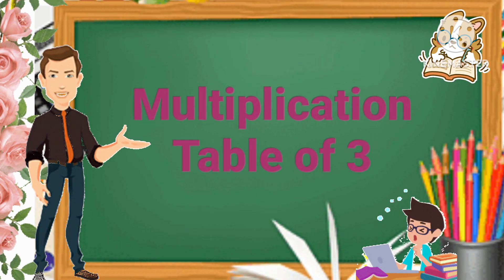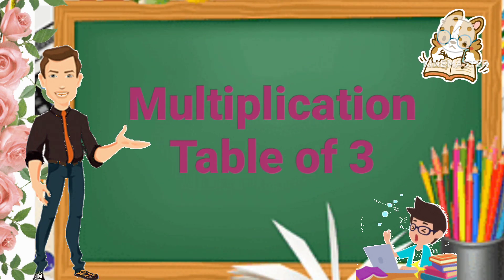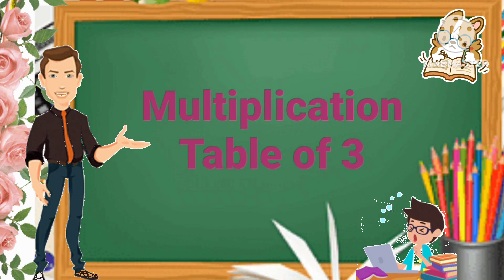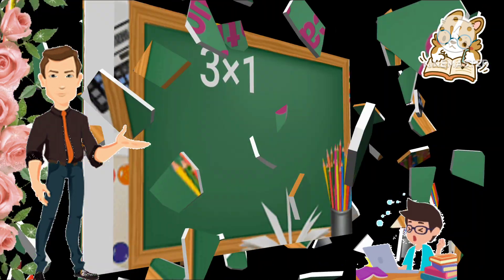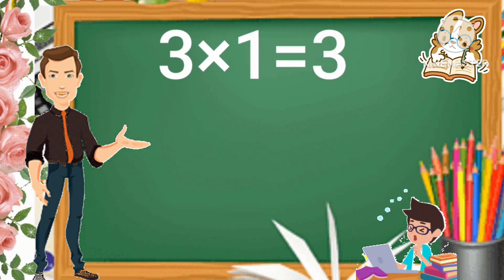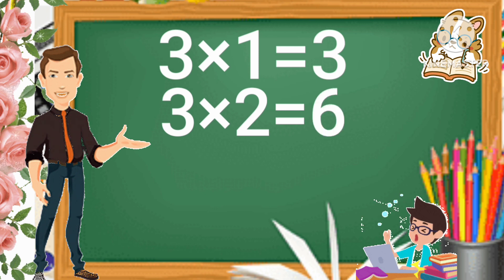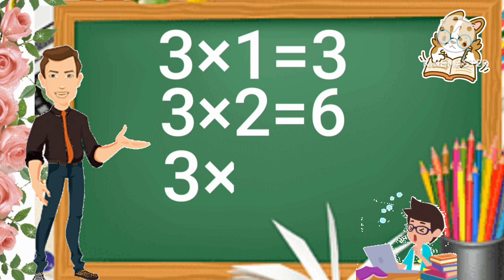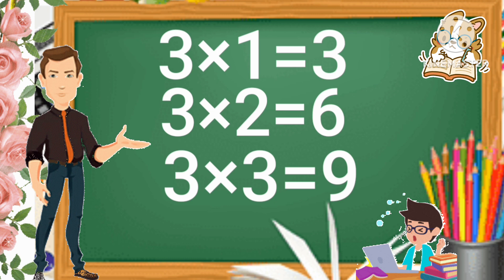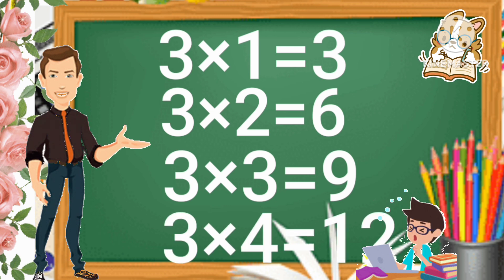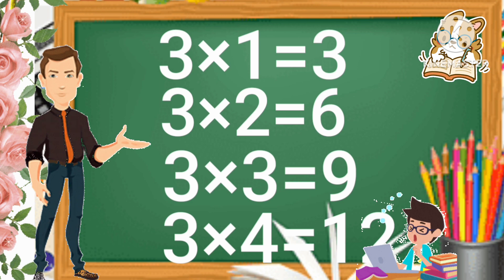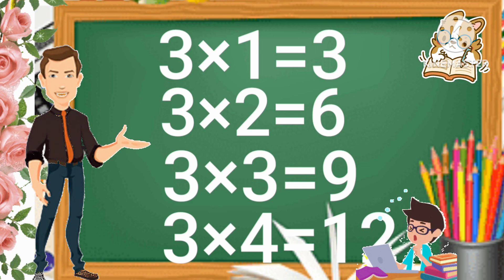Next is Multiplication Table of 3. 3 times 1 is 3. 3 times 2 is 6. 3 times 3 is 9. 3 times 4 is 12.